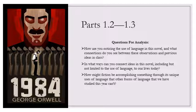The sting of the catapult bullet had worn off. He picked up his pen half-heartedly, wondering whether he could find something more to write in the diary. Suddenly he began thinking of O'Brien. Remember, O'Brien's the guy that he made eye contact with. Years ago, how long was it? Seven years it must be. He had dreamed that he was walking through a pitch dark room, and someone sitting to one side of him had said as he passed, We shall meet in a place where there is no darkness.